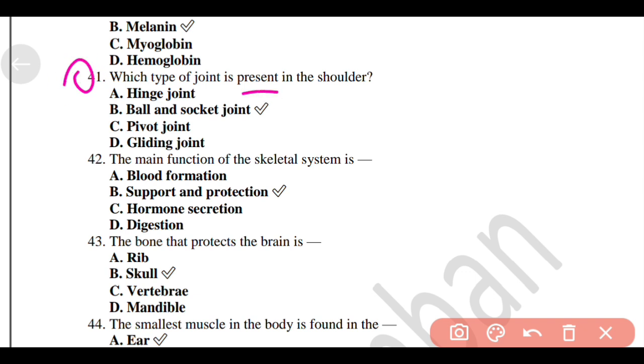Which type of joint is present in the shoulder? Option B, Ball and socket joint. The main function of the skeletal system is Option B, Support and protection.